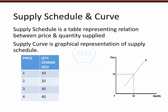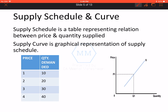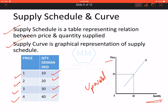Starting with supply schedule and supply curve. Agar price and quantity supplied ke beech mein relation pardate hain using a table, tho woh hota hai supply schedule. Aur agar graph bana dein, tho woh ho jayega supply curve. Jaisi jaisi price badhti jayegi, ek seller ko us mein zyada profit us particular commodity mein dhikhta jayega. That is why uska quantity supplied badhta jayega. Aur isi liye jab isko graphically plot karte hain, y-axis pe price aur x-axis pe quantity supplied, tho supply curve bantah hai upward sloping.